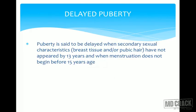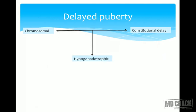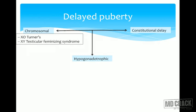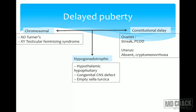Delayed puberty is defined as absence of secondary sexual characteristics by 13 years or absence of menstruation by 15 to 16 years. Causes include chromosomal (Turner syndrome, testicular feminizing syndrome), constitutional delay (streak ovaries, PCOD, absent uterus, cryptomenorrhea), and hypogonadotrophic causes such as hypothalamic hypopituitarism, congenital CNS defects, or empty sella turcica syndrome.